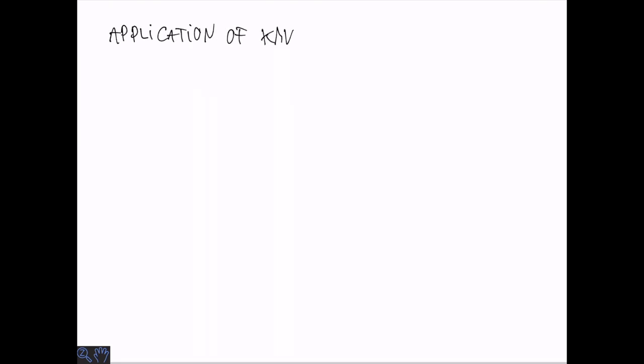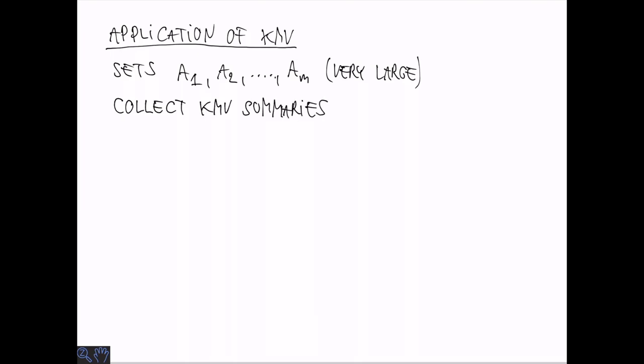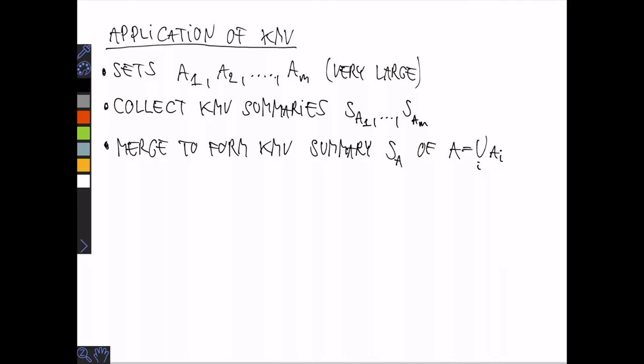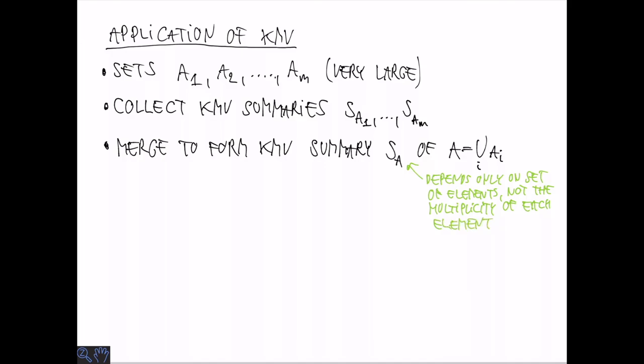Let's consider an application of this summary. Suppose we have a bunch of sets A1 through AM, and all of them are quite large. What we can do is construct a summary for each of the sets, and we can potentially collect them. Even if these sets are distributed across many machines on the internet, we can compute these relatively small summaries of maybe a few thousand elements each. Let's call those SA1 through SAM. Since these summaries are mergeable, we can merge them to form a summary of the union of these sets. Here it's important to note that this summary depends only on the set of elements that exist in the union, not on the multiplicity. If an element appears several times, we're simply going to eliminate any duplicates that we see.